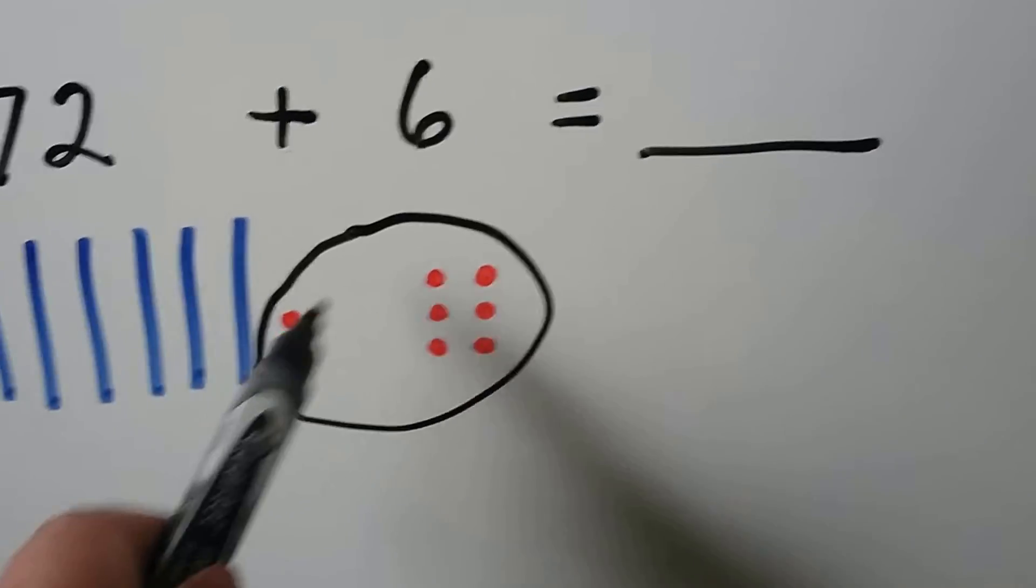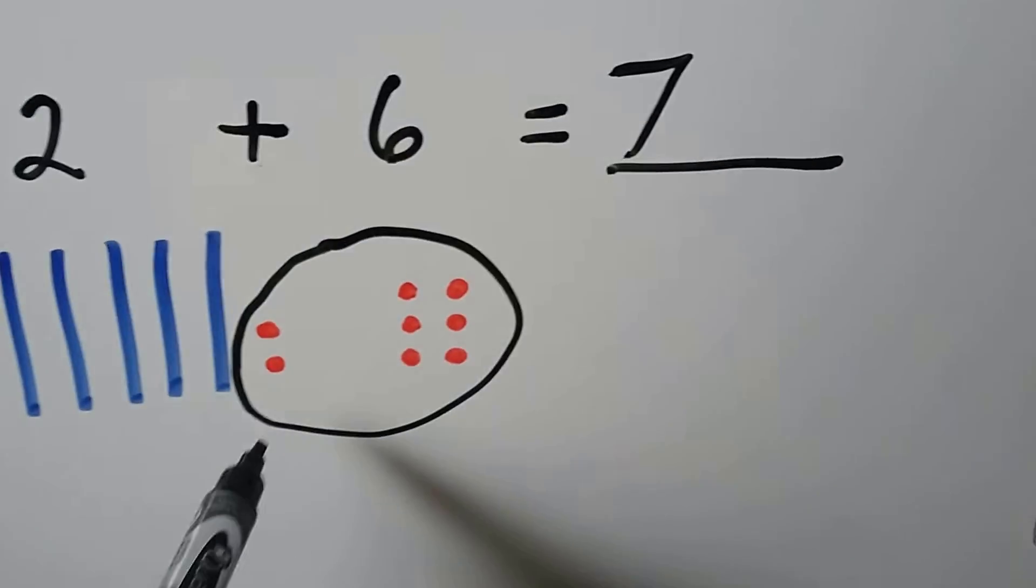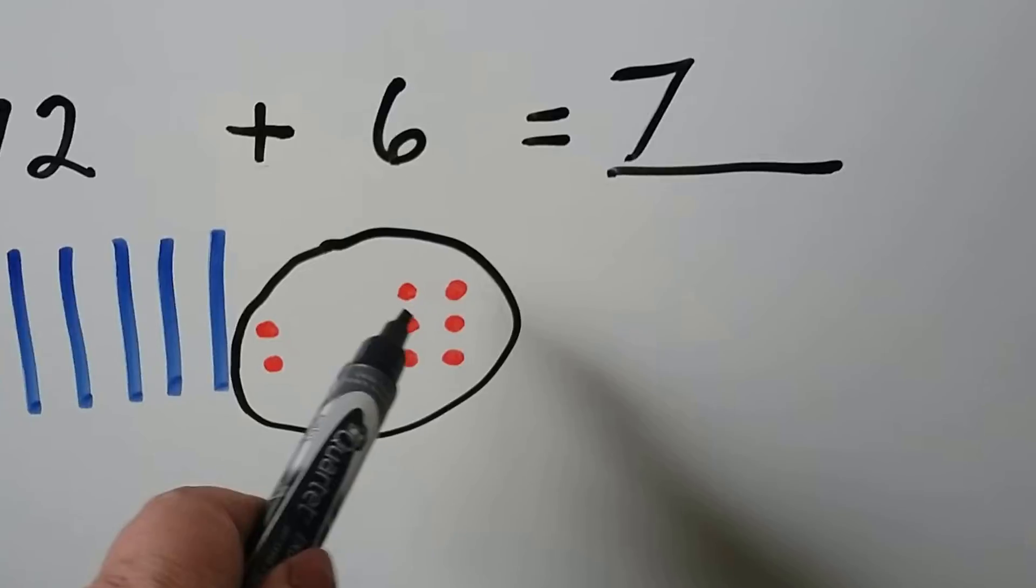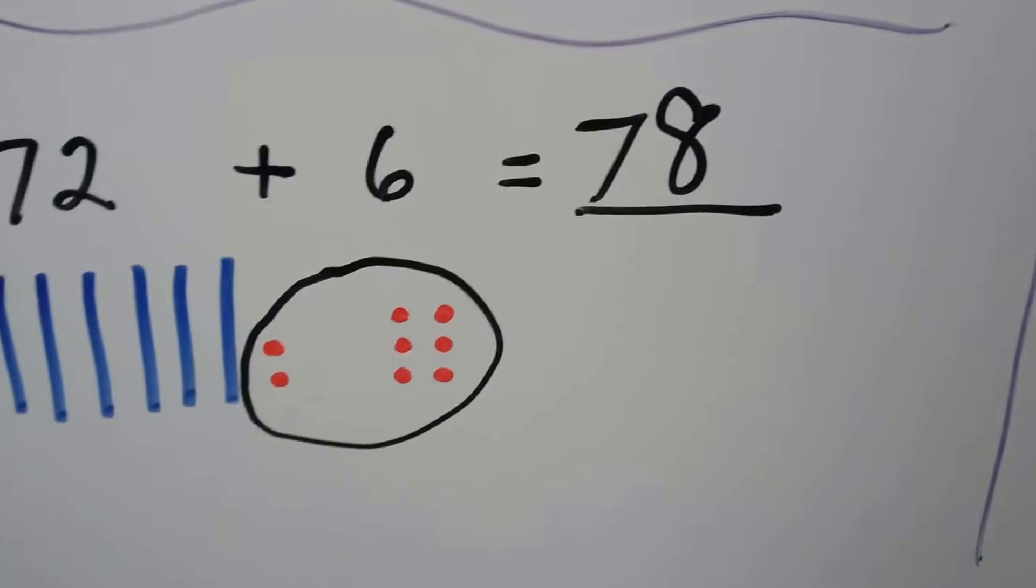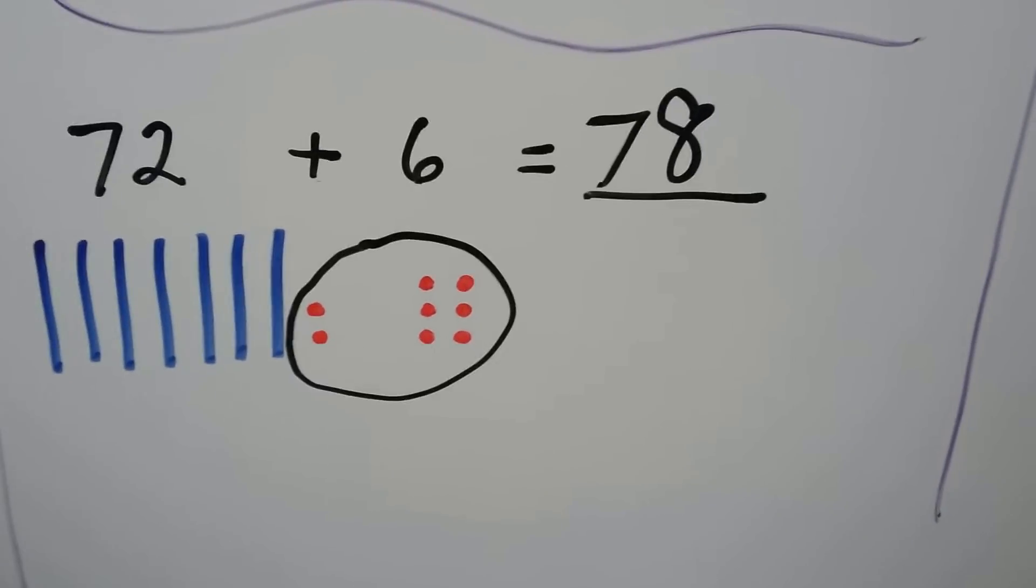We can add the 1s by grouping them together. We have 7 tens, and we have 1, 2, 3, 4, 5, 6, 7, 8 ones. 72 plus 6 is equal to 78.